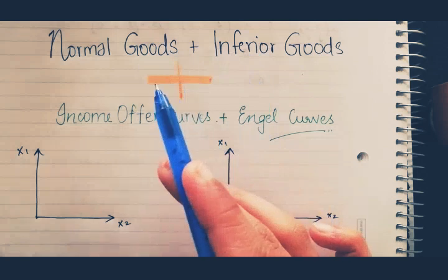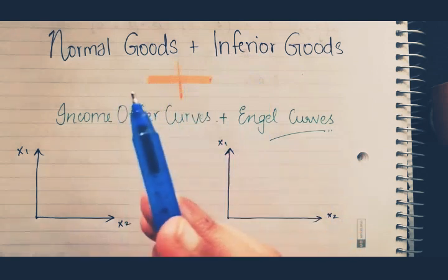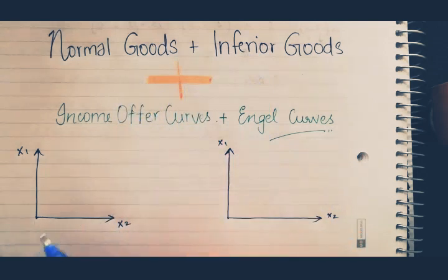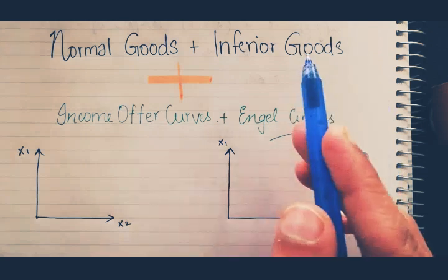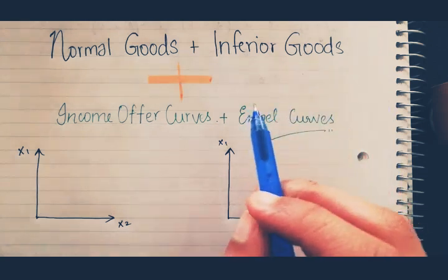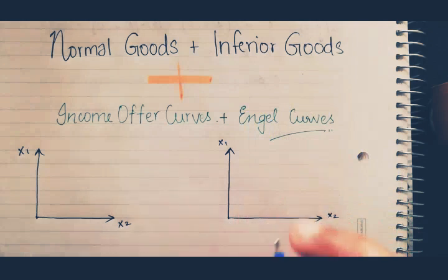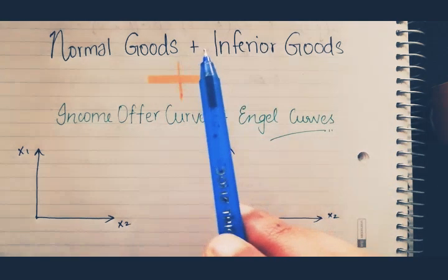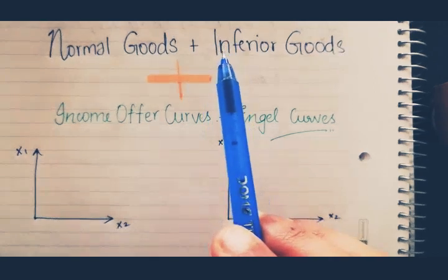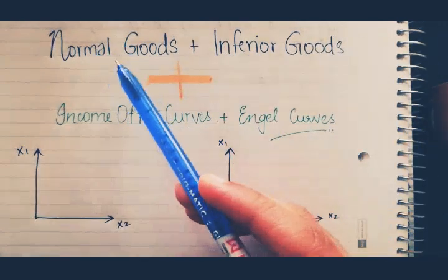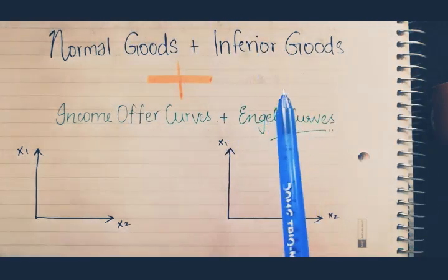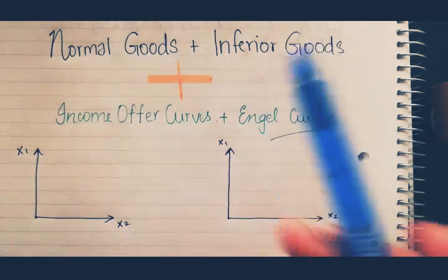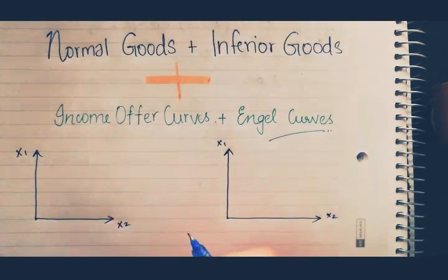Normal goods, based on economics, is basically when your income increases, the demand for the good that you like would also increase. But for inferior goods, when your income increases, the demand for the good would decrease. The thing they have in common is the change in income — when your income changes, either the demand for the good goes up or goes down.